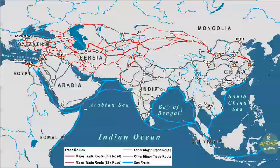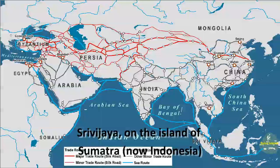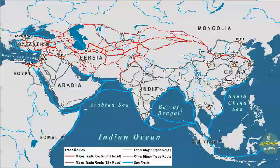Do you see any countries named on the map that no longer exist? Yes — the Byzantine. Constantinople is now Istanbul. And Persia. South of China, along the sea route, it says Srivijaya.